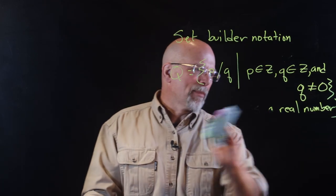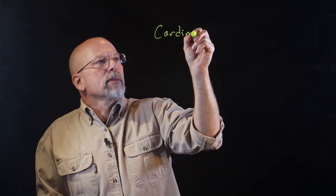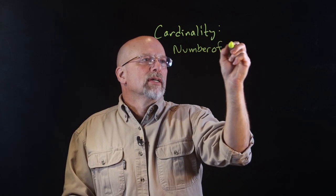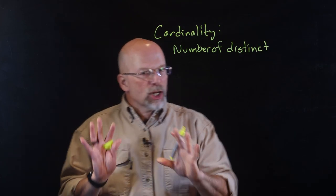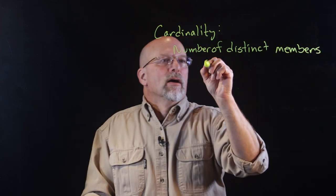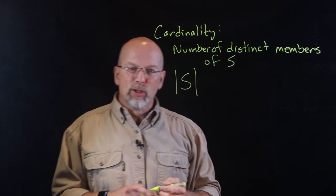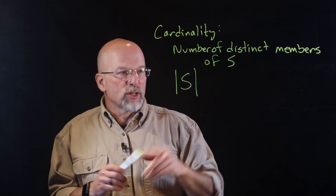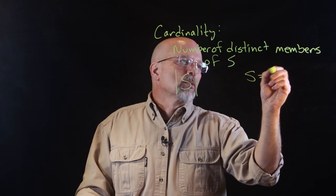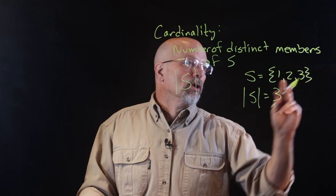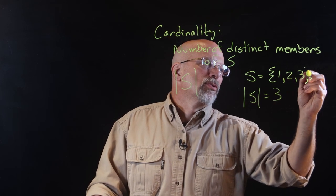We've got a few last properties to talk about. First, cardinality. Cardinality is the number of distinct members of S. It's represented with what look like absolute value symbols. So if S = {1, 2, 3}, the cardinality of S is 3. The same would be true if S = {1, 2, 3, 3, 2, 1} — we're still talking about the total number of distinct elements in there.